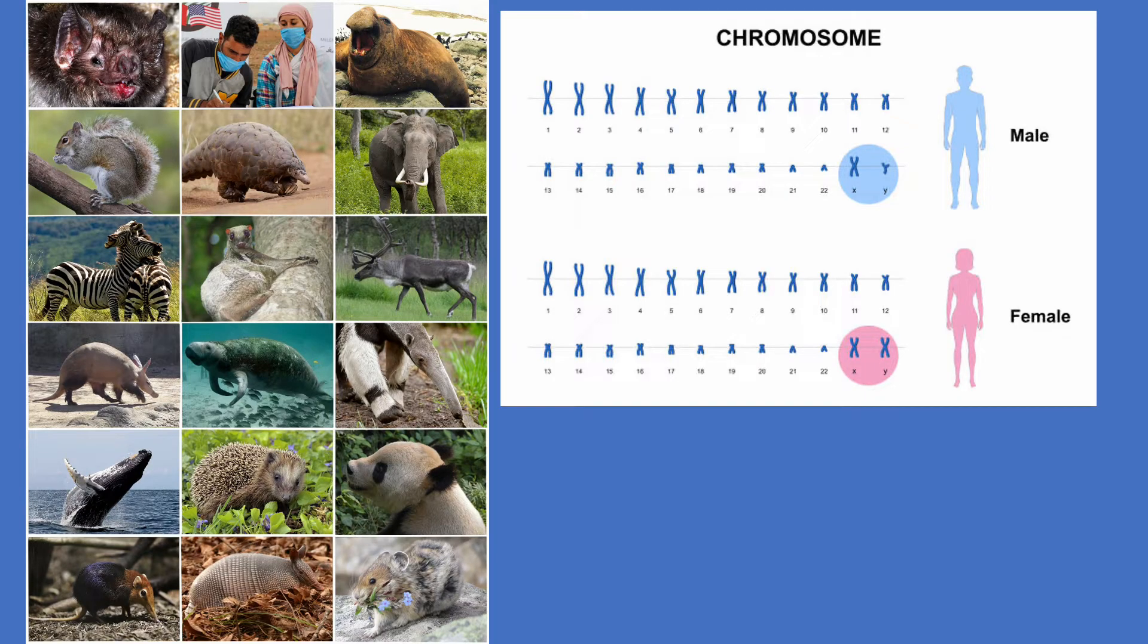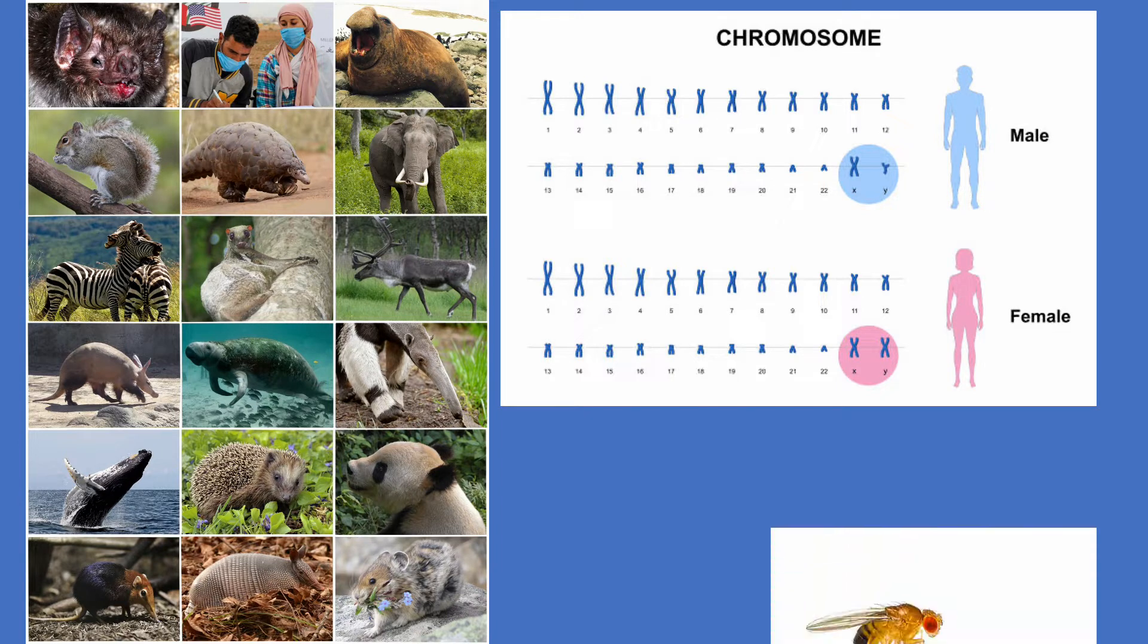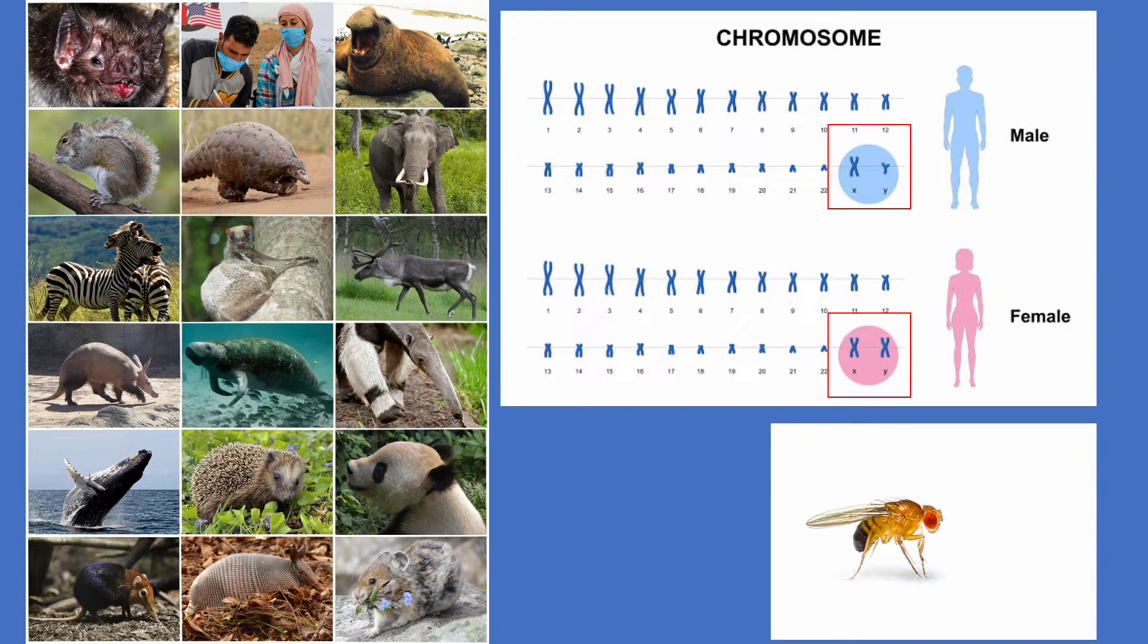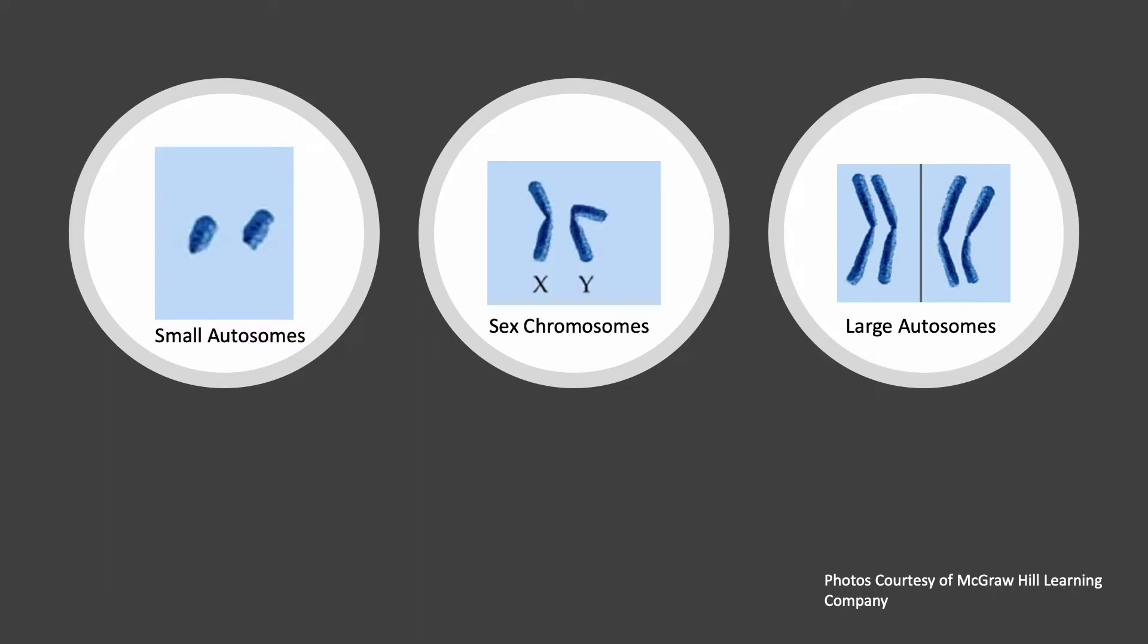Like mammals, Drosophila or fruit flies produce XX females and XY males, but how they achieve their distinguishable sexes is very different. Drosophila have four homologous pairs of chromosomes. There are three pairs of autosomes with two larger pairs and one smaller pair and one pair of sex chromosomes with a Y chromosome much smaller than the X.